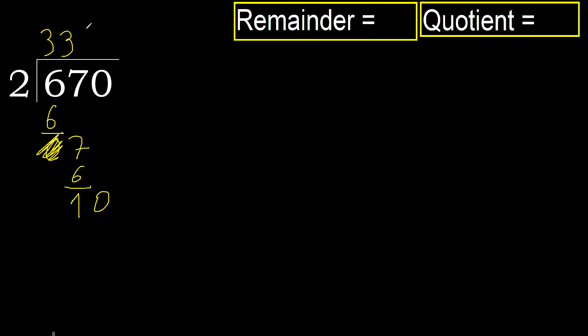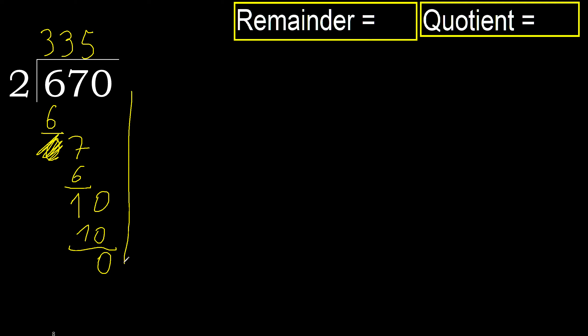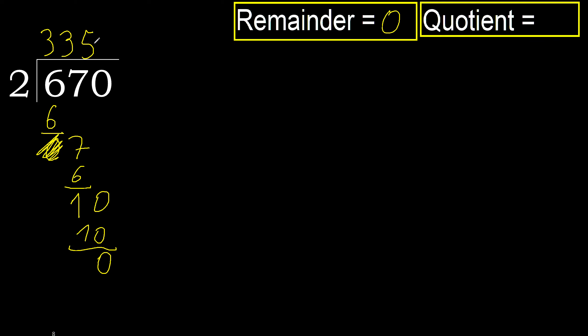Next, bring down — 10. 2 multiplied by 5 is 10. 10 is not greater. 10 minus 10 equals 0. Next — that is not a number. Therefore, finished: 670 divided by 2 is 335.